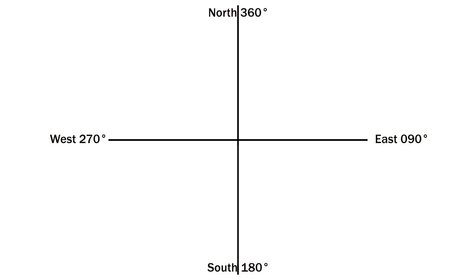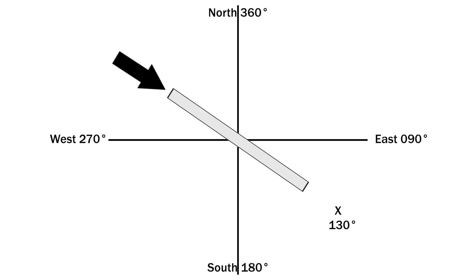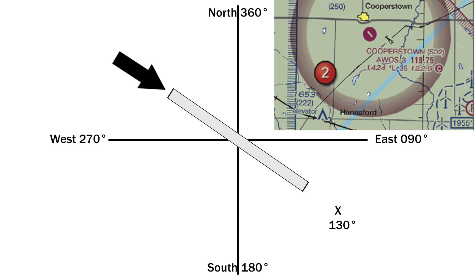Draw your compass rose — two lines intersecting at 90 degrees — and label the four cardinal directions starting with north at the top, then clockwise: east, south, west. This pilot is landing on runway one-three, meaning when on final approach and when their wheels touch down, their compass will read 130. That's roughly between east and south. Put a little X there — this is the direction they'll be facing when landing, meaning when on final approach they'll be over here facing that direction. Looking at Cooperstown on the chart, the runway orientation roughly matches what we drew.